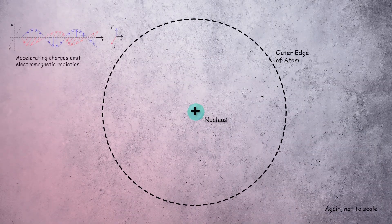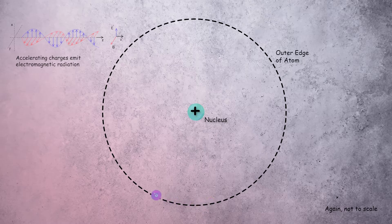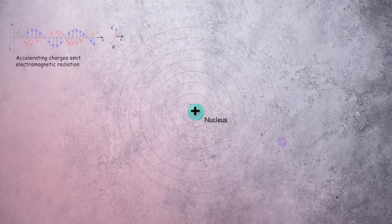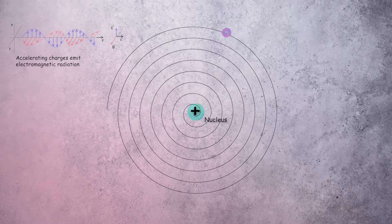This is a problem because any accelerating charged particle, like the orbiting electrons, will radiate electromagnetic radiation. As the electrons emit this radiation, they lose potential energy and spiral into the nucleus.